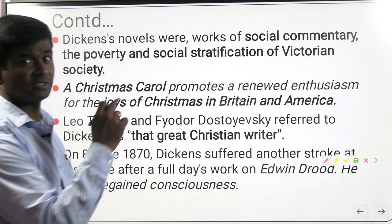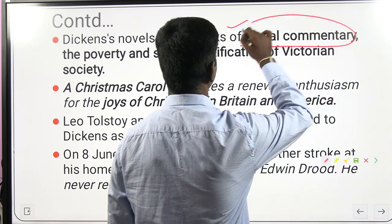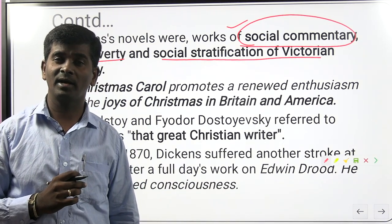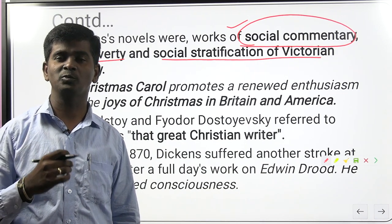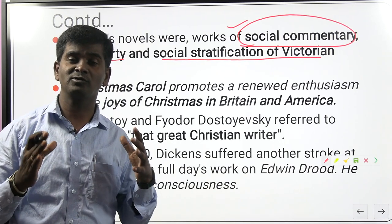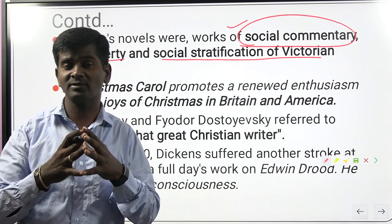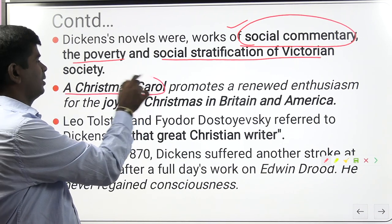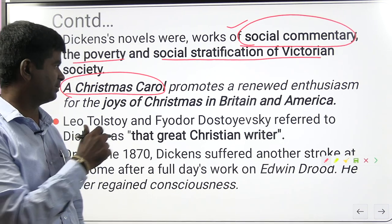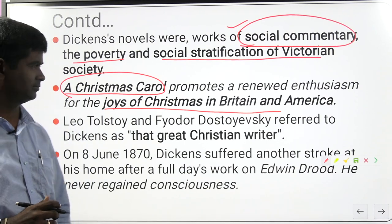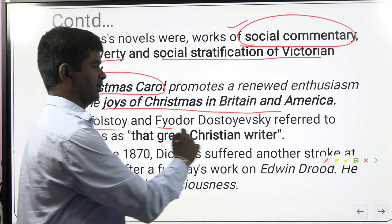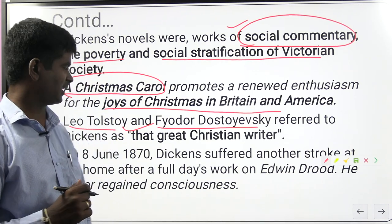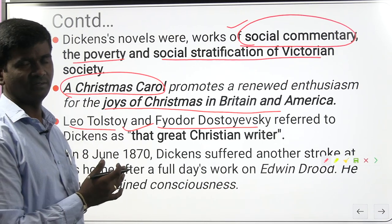Dickens's novels were works of social commentary. He made comment on poverty and social stratification, and indirectly commented on the Poor Law Act of 1833, the First Reform Bill of 1832, and the Second Reform Bill of 1837. Most of his novels were composed before 1850, making comment on the Victorian Parliament and government. Another popular novel is A Christmas Carol, which talks about the joys of celebrating Christmas in Britain and America. Leo Tolstoy and Dostoevsky referred to it as the greatest Christian writing.